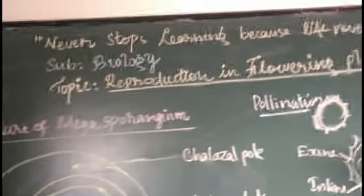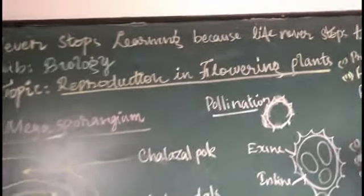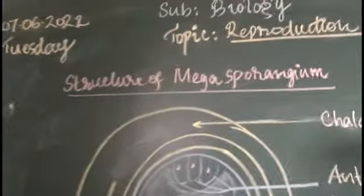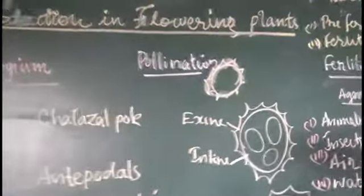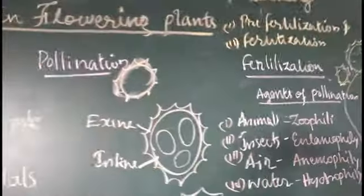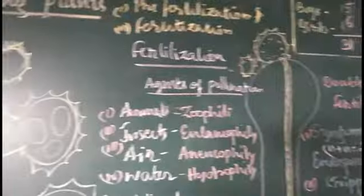Today we will be discussing the topic: reproduction in flowering plants, the structure of Megasporangium, how pollination happens, and how double fertilization happens.